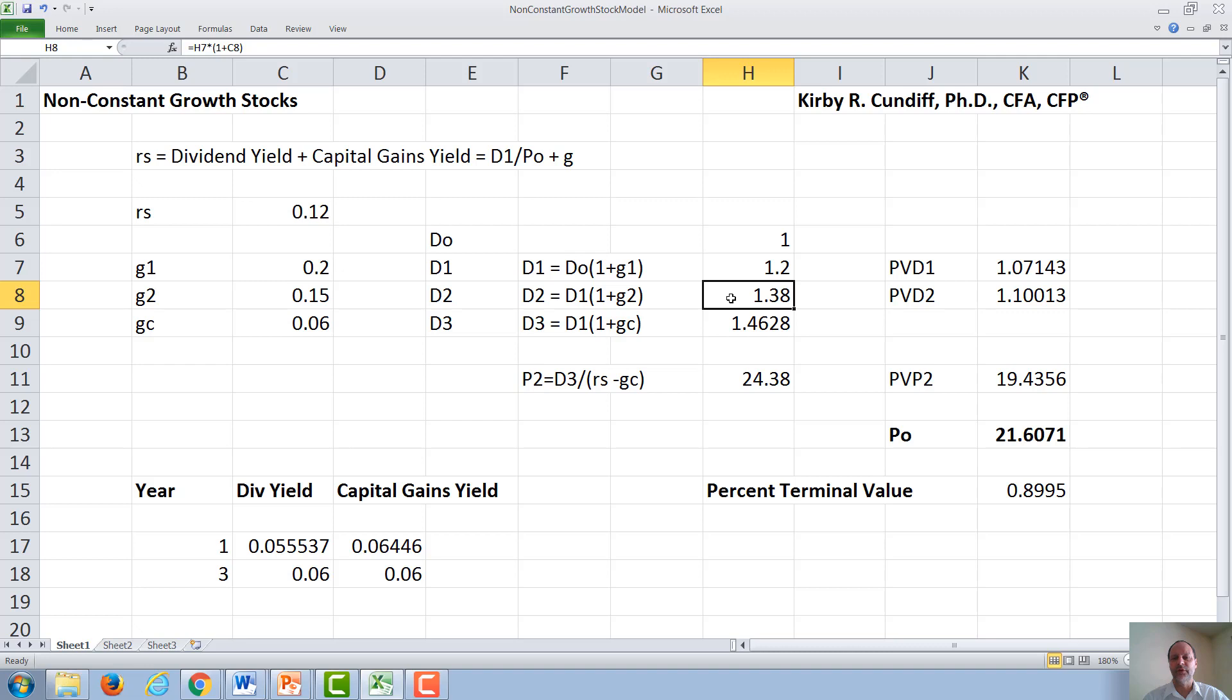The dividend the year after that, D2, will then be the dividend of 1.2 times 1.15, or 1.38. The dividend in year 3 will be 1.38 times 1 plus the constant growth, 0.06, or 1.46.